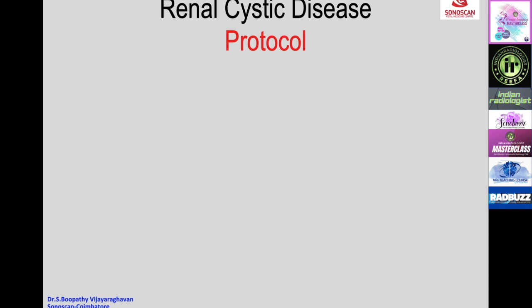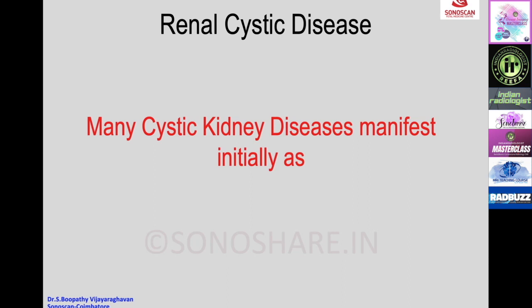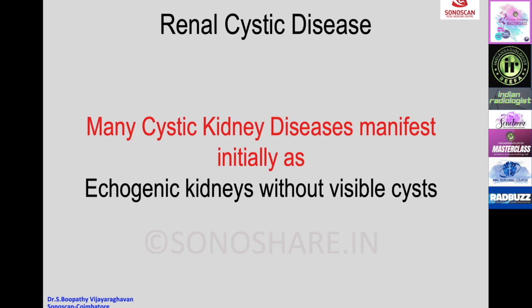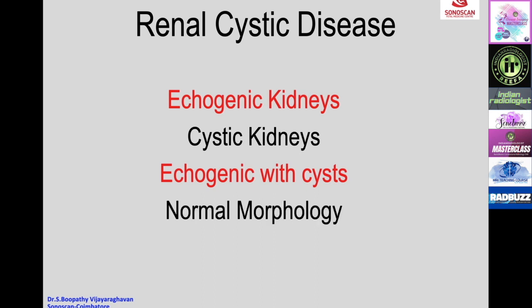The protocol for renal cystic disease: ultrasound is the first investigation of choice, and CT/MRI is not recommended for routine assessment of kidney cysts. Many cystic kidney diseases manifest initially as echogenic kidneys without visible cysts, with cysts developing later. As a result, cystic disease and echogenic kidneys are considered together, both in prenatal sonography and postnatal life. Renal cystic disease can manifest as echogenic kidneys, cystic kidneys, echogenic kidneys with cysts, or initially normal morphology that develops abnormalities over time.